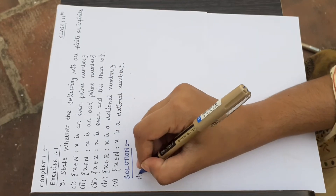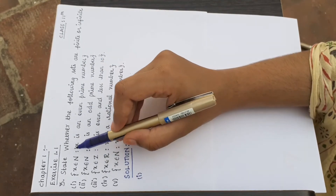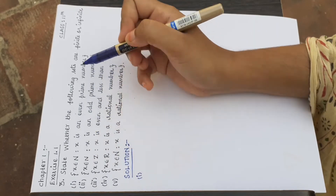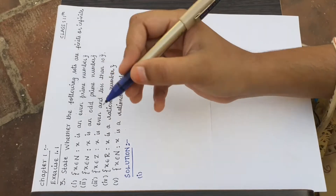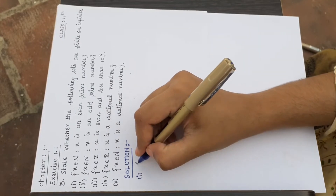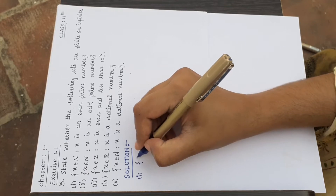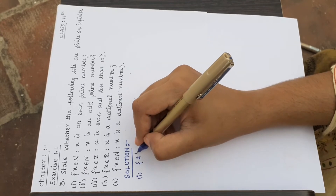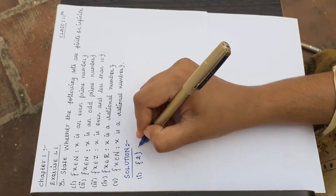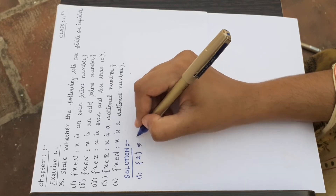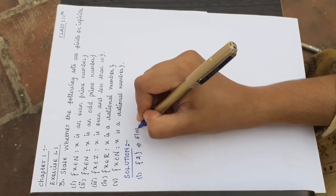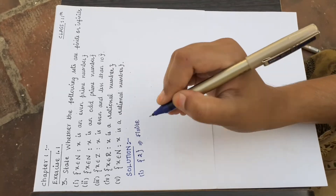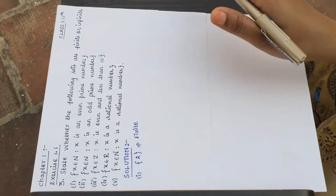First subdivision: x belonging to N, x is an even prime number. Even prime number — we will have only 2. Among prime numbers, the only even one is 2, no other even prime exists. So it is a finite set — countable. {2} is a finite set.